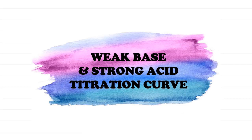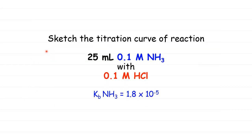For the second example, we look at the titration curve of weak base and strong acid, which results in an acidic salt. The question asks you to sketch the titration curve for the reaction between 25 mL of 0.1 M NH₃ — which will be the analyte — and 0.1 M HCl, which will be the titrant. Another piece of information given is the Kb of NH₃, which tells us that the base is a weak species.